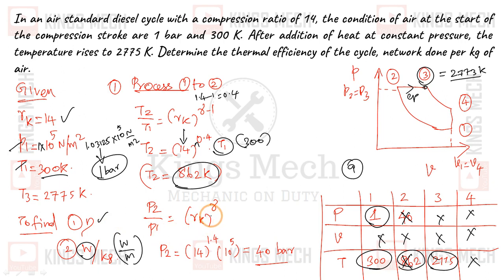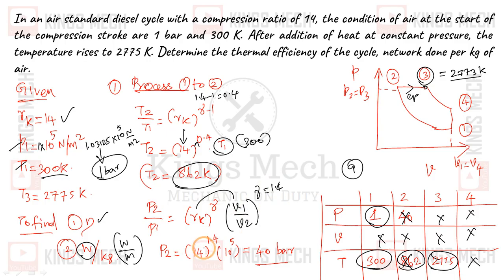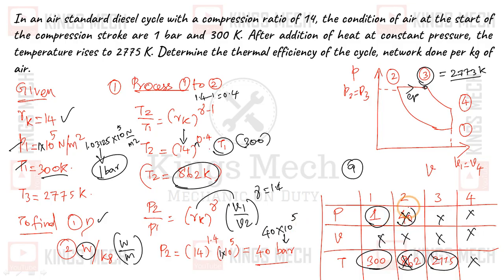Next, P2 divided by P1 equals RK to the power of gamma, which is V1 by V2 to the power of gamma. Gamma value is 1.4, so 14 to the power of 1.4 multiplied by 1 × 10⁵ gives approximately 40 × 10⁵, so P2 equals 40 bar.